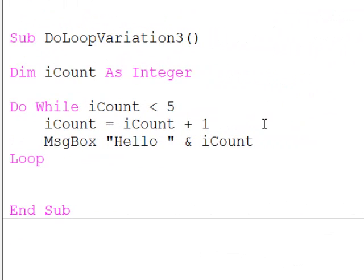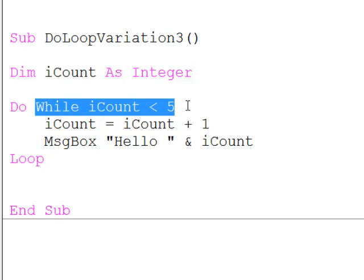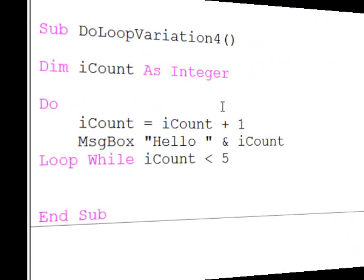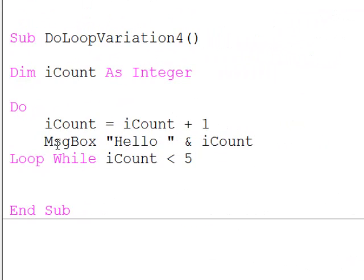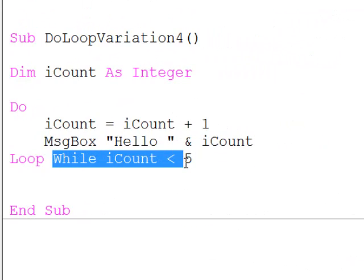Here's the third variation, where we are saying do while an exit condition has not yet been met. And the fourth variation is where we are saying loop while an exit condition has not yet been met.